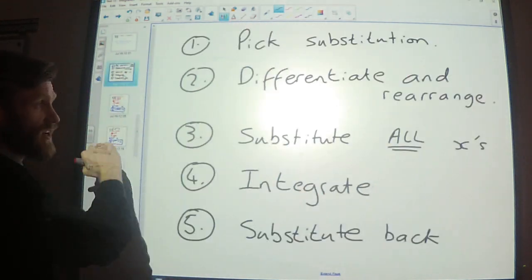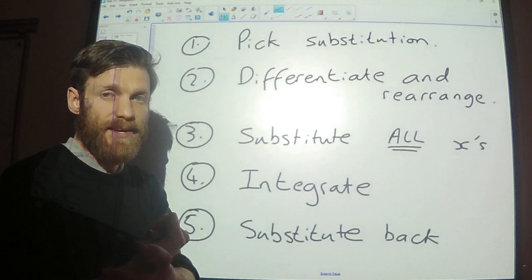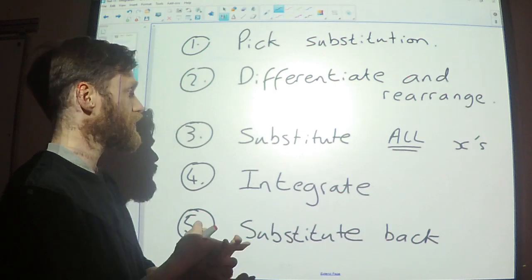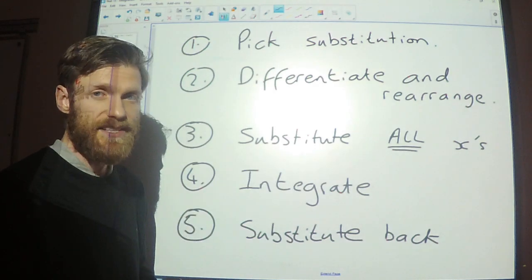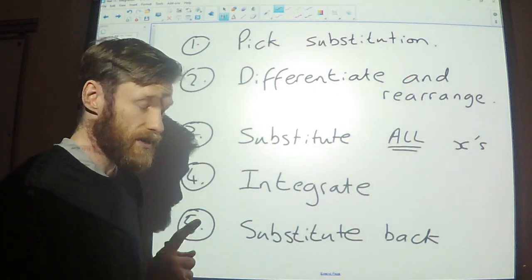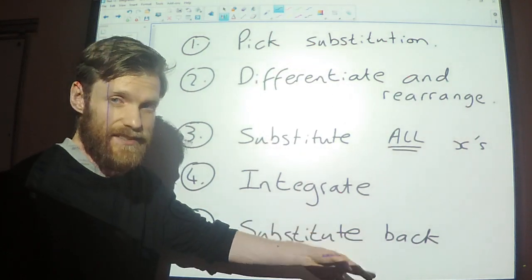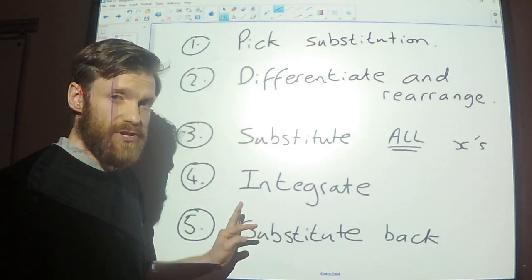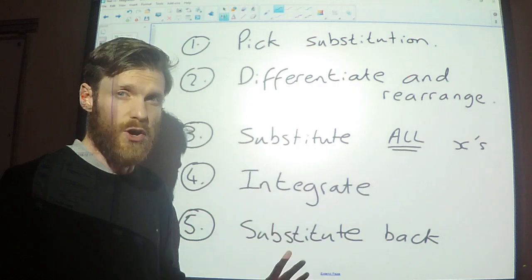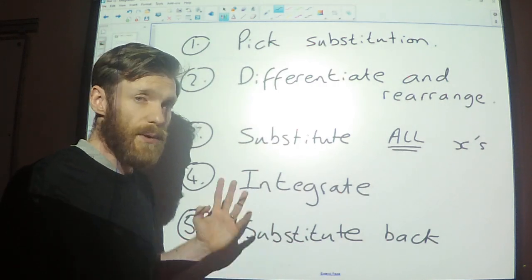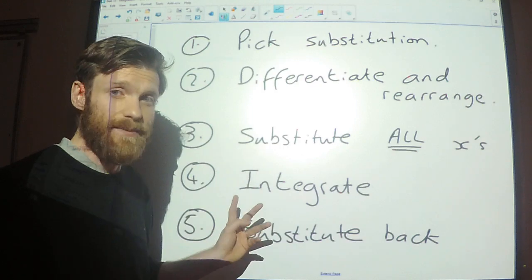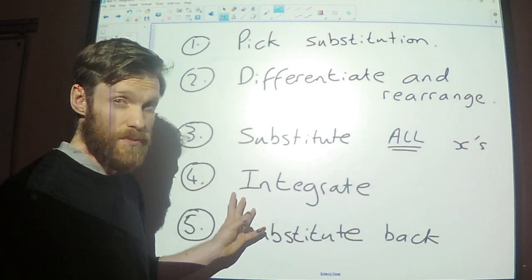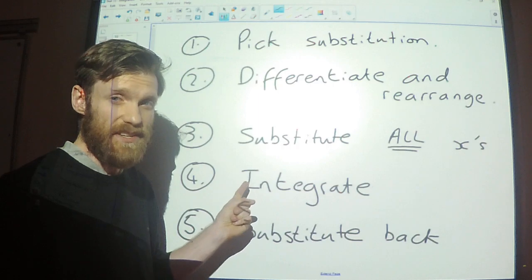To summarise the steps of integration by substitution: Step 1, pick your substitution. Step 2, differentiate and rearrange to make dx the subject. Step 3, substitute all of the x's — including the dx, most importantly. Then integrate and make the substitution back. You need to know this throughout the rest of your A-level. I've picked these three examples on purpose — some of you might have noticed a pattern, and a shortcut. At the beginning I called this the reverse chain rule.